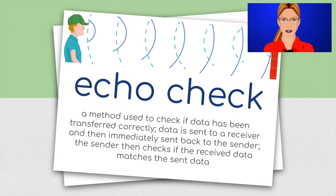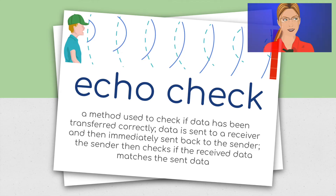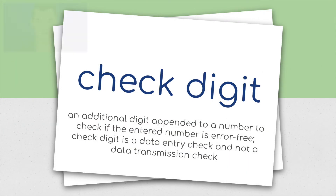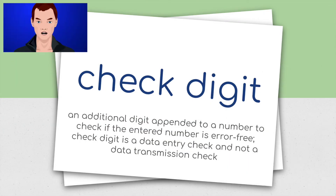A method used to check if data has been transferred correctly: data is sent to a receiver and then immediately sent back to the sender. The sender then checks if the received data matches the sent data. Check digit: an additional digit appended to a number to check if the entered number is error free. Check digit is a data entry check and not a data transmission check.